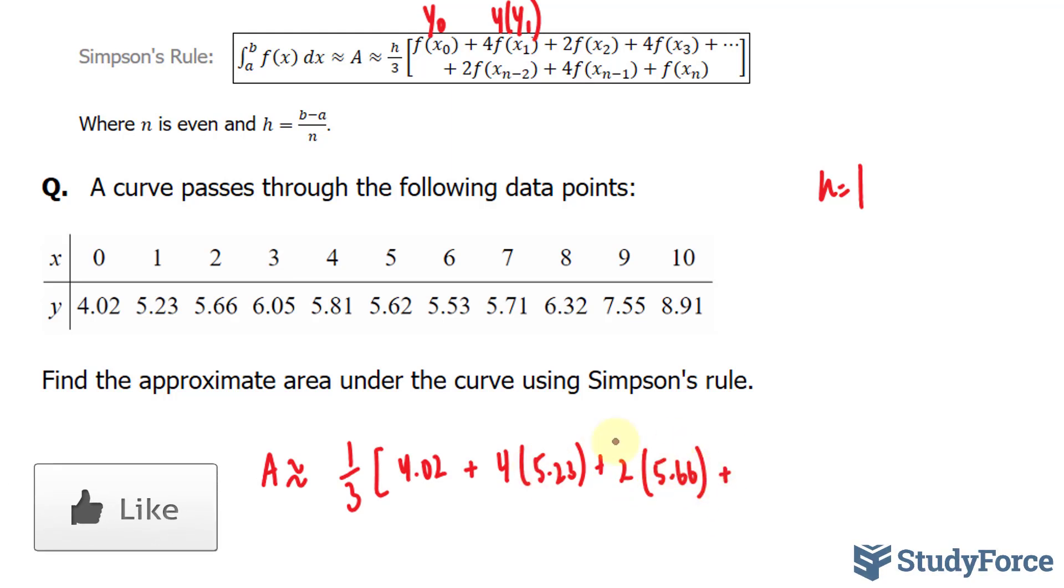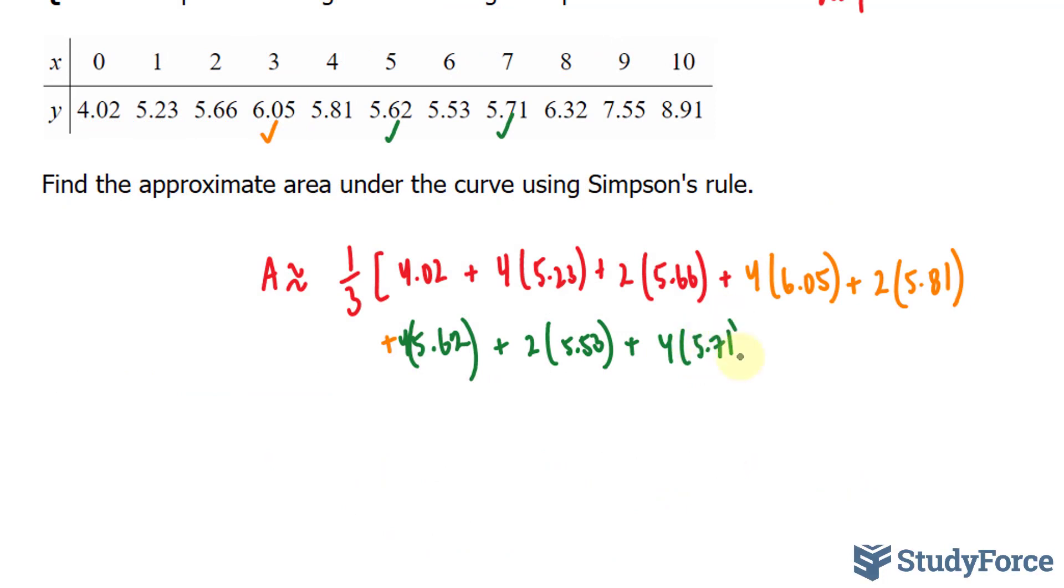It alternates between 4 and 2. Plus 4 times 6.05, plus 2 times 5.81, plus 4 times 5.62, plus 2 times 5.53, plus 4 times 5.71, plus 2 times 6.32, plus 4 times 7.55.